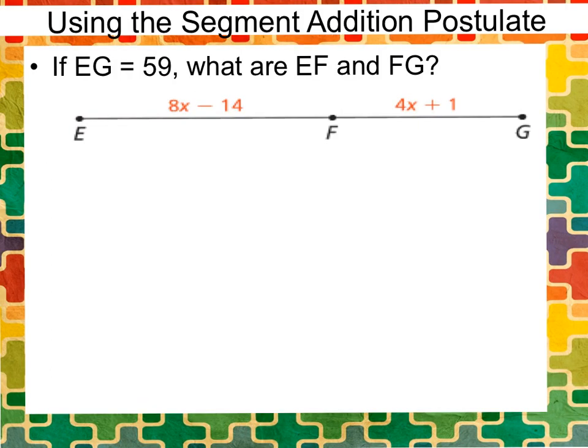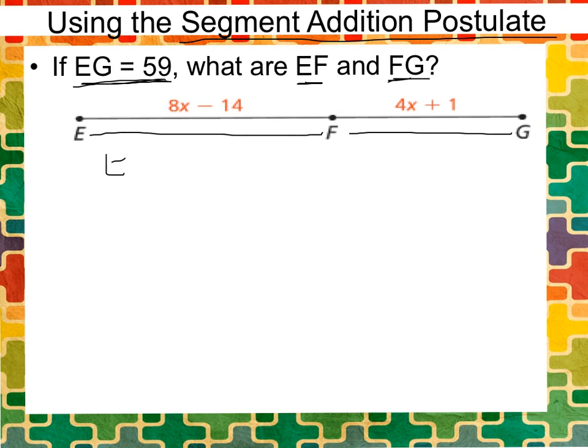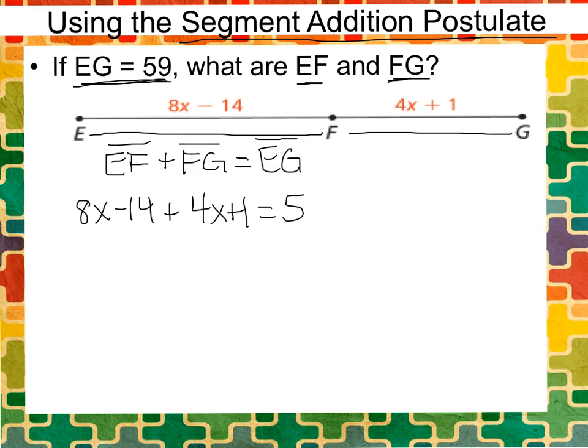I have one more example for you just in case you have some difficulty. This one gave us different information. It told us that EG is 59 and they want to know what EF and FG are. By the segment addition postulate, EF plus FG would give us a total distance of EG. We know that EF is 8X minus 14. We're going to add that to FG which is 4X plus 1, and this will equal 59 which is EG.